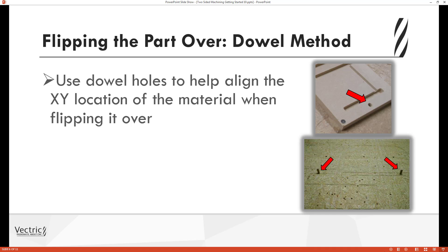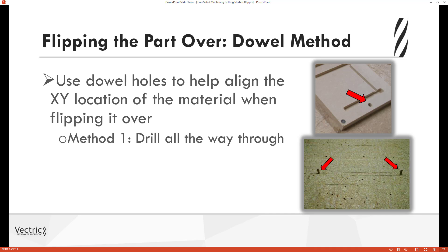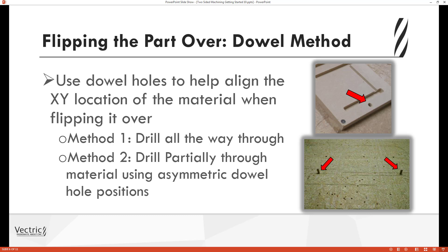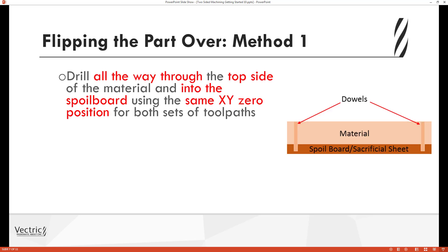The method we're going to talk about for physically aligning the XY location when flipping the part uses dowel holes. Here you can see a picture of the top side of our part with a hole cut for the dowel. There's a sacrifice sheet on our machine with two dowel holes machined in, and when we flip the part over it locates correctly on those two positions. There are two ways to approach this: method one is to drill all the way through your material and into your spoil board; method two is to drill partially through the material using asymmetric dowel hole positions.